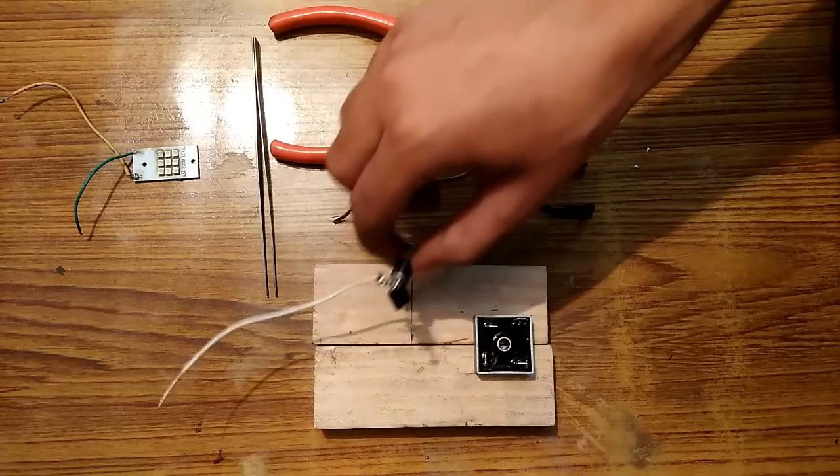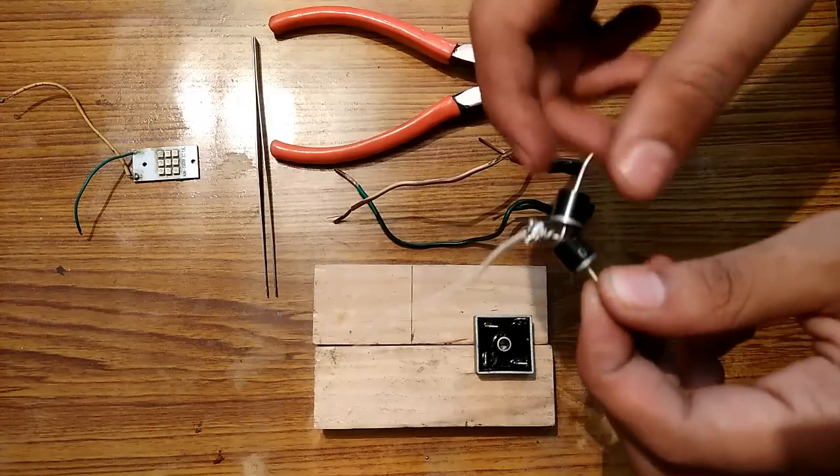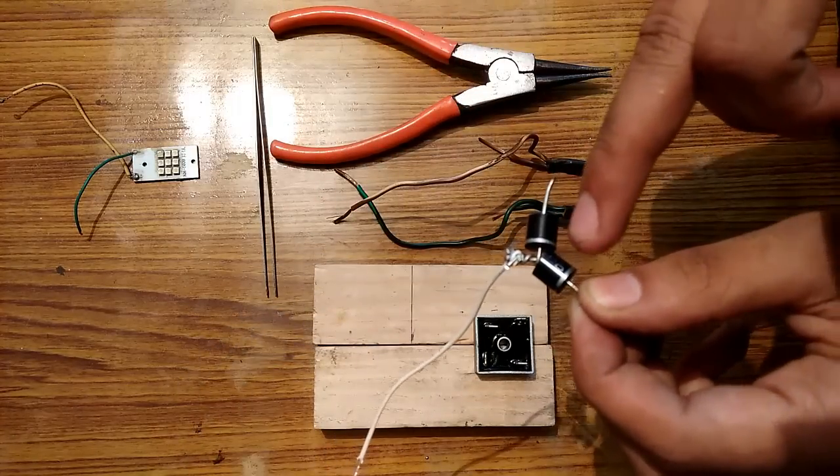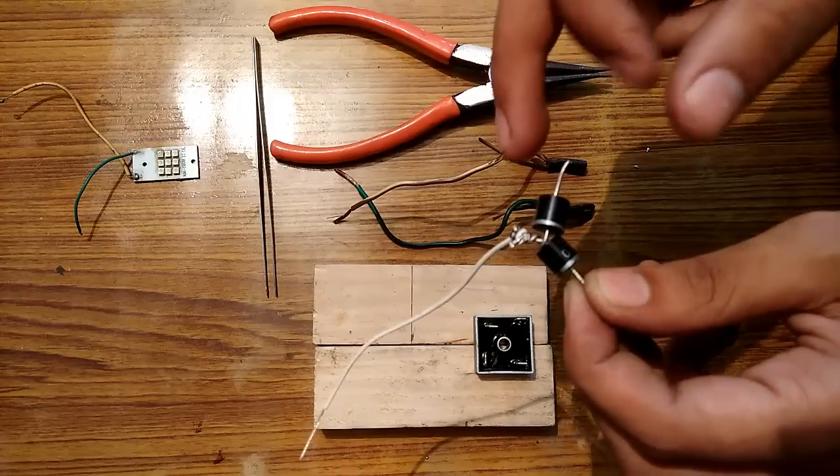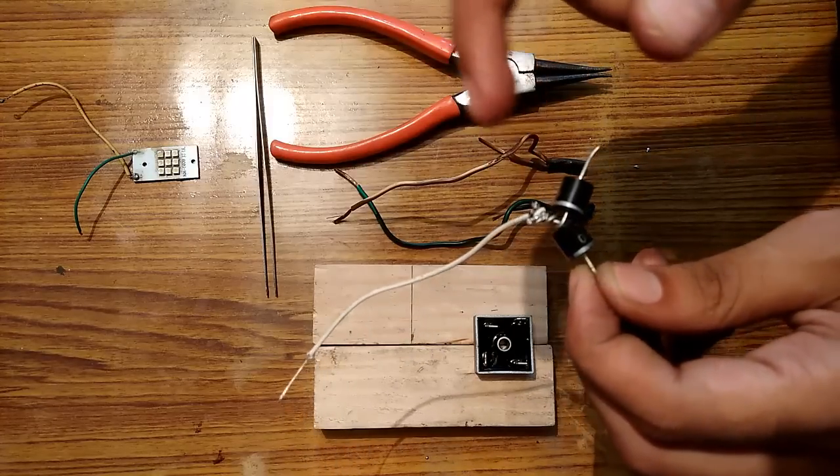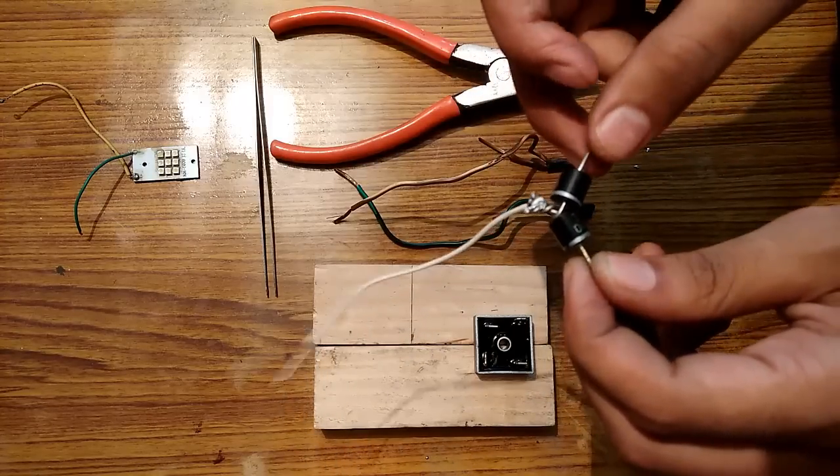So now you have to connect two diodes like this. The back of one diode is connected to the front of the other diode and the joint wire will be connected at the joint point in between.